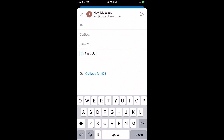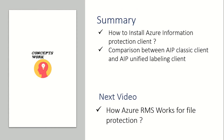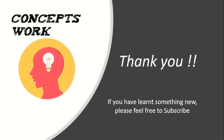So that was all about configuring clients and how they work seamlessly across different platforms. To summarize: we covered how to install the Azure Information Protection Unified Labeling client and the comparison between the AIP classic client and the AIP Unified Labeling client. In the next video we'll talk about how the protection part works with Azure RMS when combined with AIP. If you learned something new, please feel free to subscribe — thank you for your time.